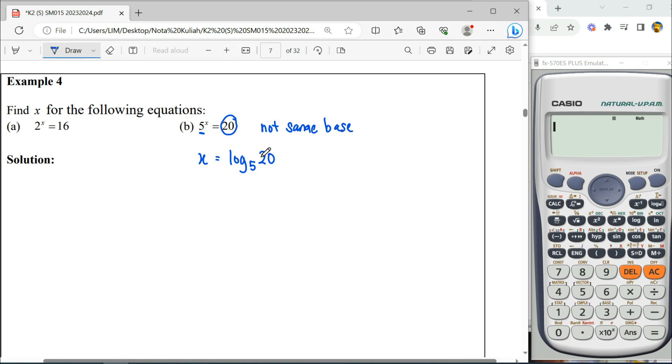So how to get this we can use our calculator where you can see this button. Plug in our base is 5 and then the value we want to find here is 20, so automatically we can solve for x which is 1.861, giving more than 3 significant figures.